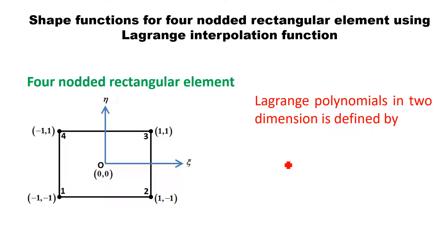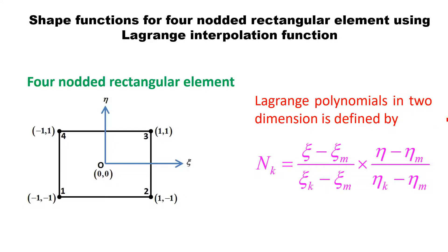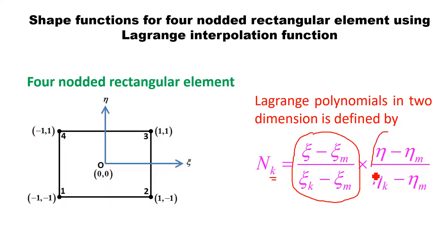Lagrange's polynomial in a two-dimensional element is written as: Nk equals the product of two ratios. The first ratio is for the xi coordinate: xi minus xi_m upon xi_k minus xi_m. The second ratio is for the eta coordinate: eta minus eta_m upon eta_k minus eta_m. Here, k is the node number for which you are writing the shape function — so when writing N1, k equals 1, and when writing N2, k equals 2. In the 2D element, the eta coordinate ratio is added in addition to the xi ratio used in the 1D case.